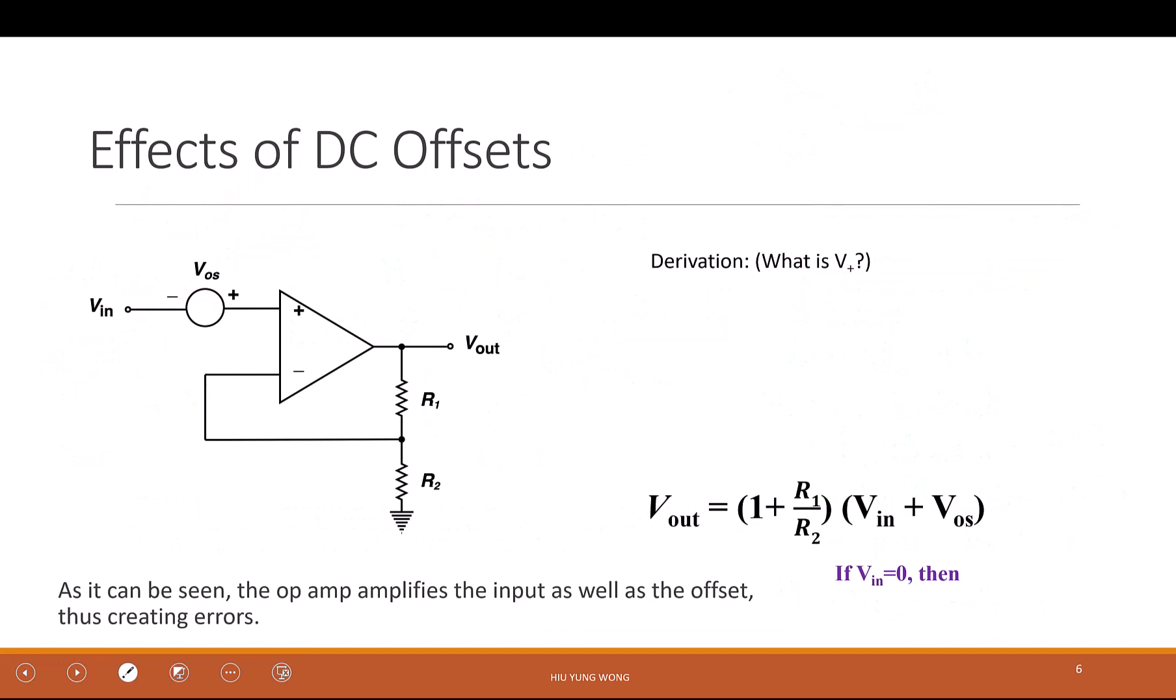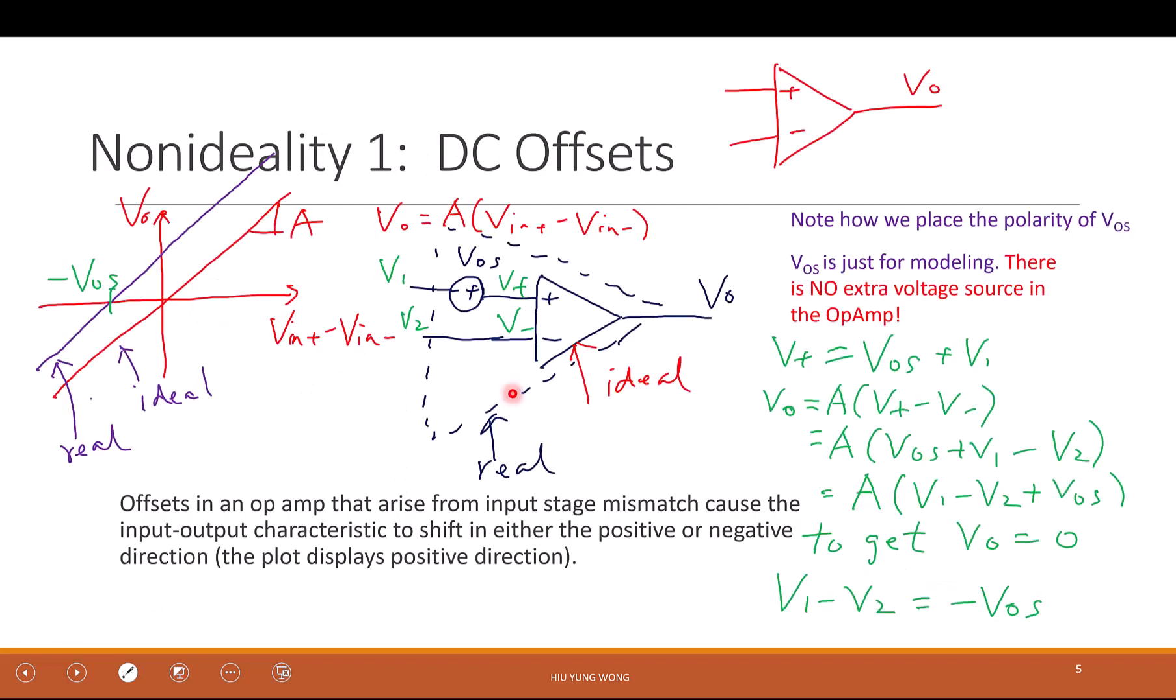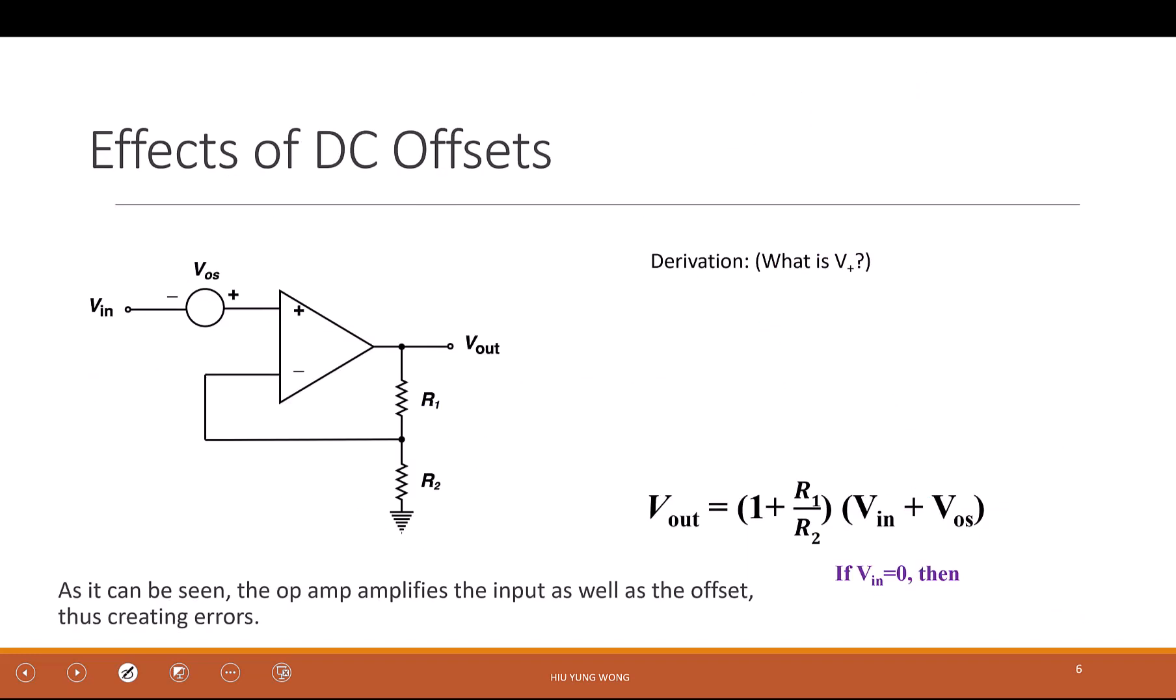Now, we can quickly take a look why this is a problem. We actually kind of explained already - when your inputs have a difference of zero, I expect the outputs to have a difference of zero also. But when you have offset, it is not. When your input has a difference of zero, your output actually has a finite value. Now, what if I put this into this amplifier? What type of amplifier is this? Inverting or non-inverting? Non-inverting, because the input goes into the positive terminal.